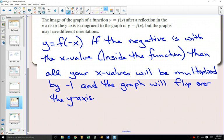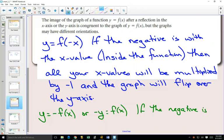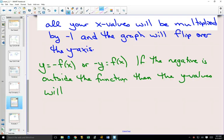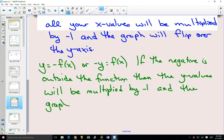So the same thing happens with the negative. If it's inside the function, it affects the x values. And if you had the negative outside the function. So if it's outside the function, then the y values will be multiplied by negative 1. And the graph will flip over the x-axis.